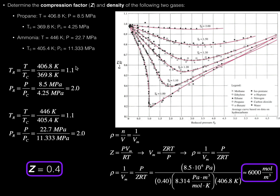These two gases actually behave similarly because the reduced temperature and reduced pressure — 1.1 and 2 respectively for propane — were the same as those for ammonia. Because they have exactly the same reduced temperature and the same reduced pressure, they behave similarly. We then used those values and the graph to determine the compression factor. Go back to that video if you want more detail on that.